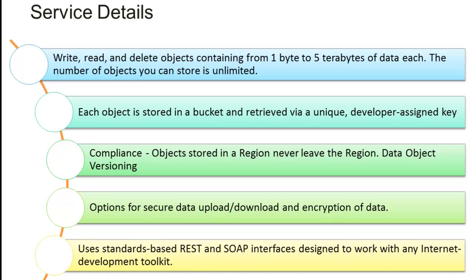S3 uses standard-based REST and SOAP interfaces designed to work with any Internet development toolkit. These interfaces can be used with any Internet development toolkit, and you can develop your application in any language like C, C#, Java, .NET, or any other language. This makes it very easy to communicate with S3 buckets to pull or put data. Because it uses the very standard REST and SOAP interfaces which work over HTTP and HTTPS.